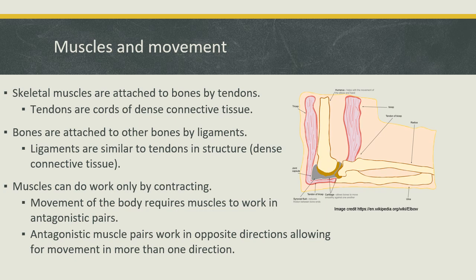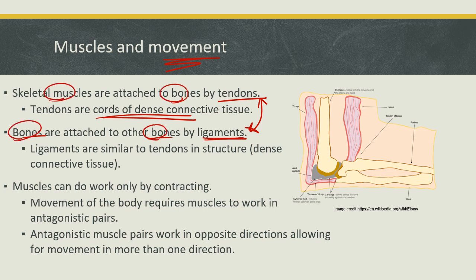Some details regarding movement and muscles: skeletal muscles are attached to bones by tendons, and bones are attached to other bones by ligaments. We need to know the difference between tendons and ligaments. They're both cords of dense connective tissue. Tendons connect bones to muscles. Ligaments connect bones to other bones. A mnemonic: L comes before T in the alphabet, and B comes before M in the alphabet.